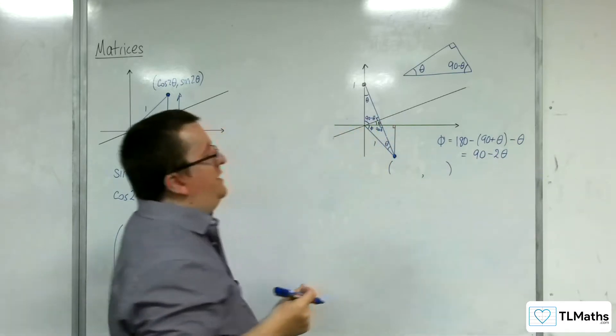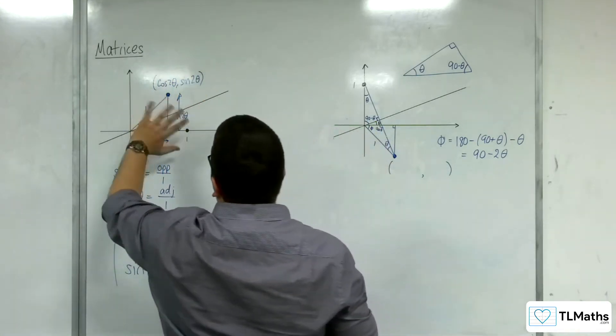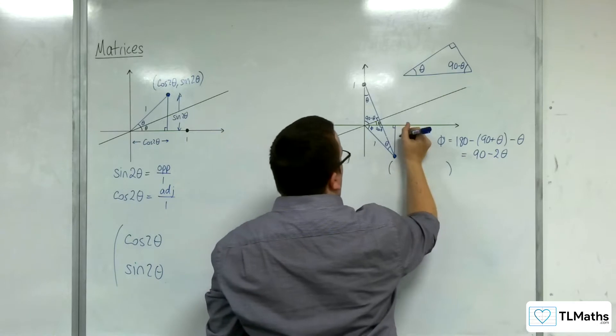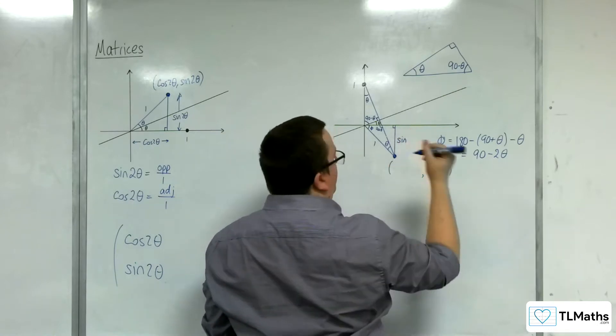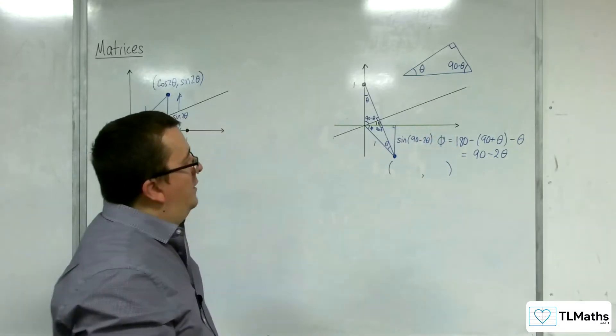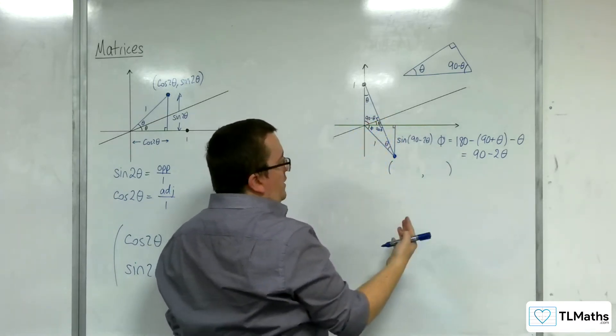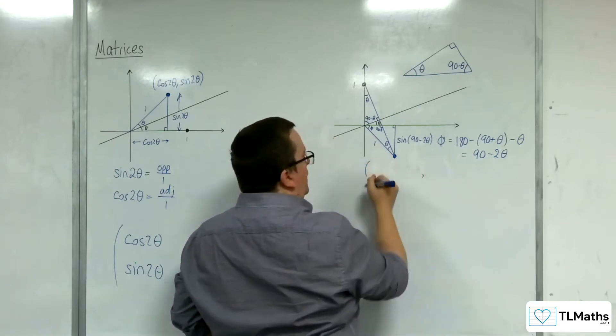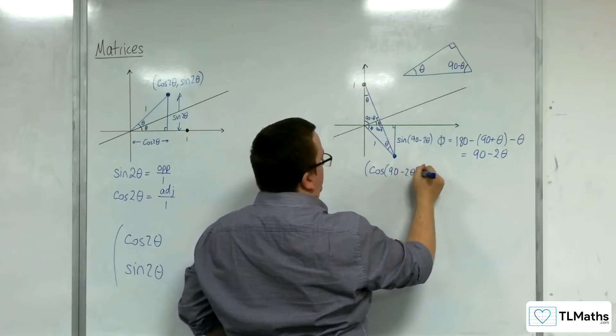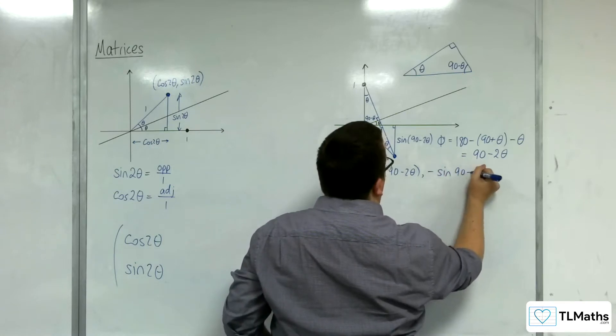If phi is 90 minus 2 theta, then just in the same way that we were working with sine and cosine over here, this opposite side must be sine of phi, sine of 90 minus 2 theta. And likewise, this side must be cosine of 90 minus 2 theta. So the coordinates of this point are (cosine 90 minus 2 theta, negative sine 90 minus 2 theta).